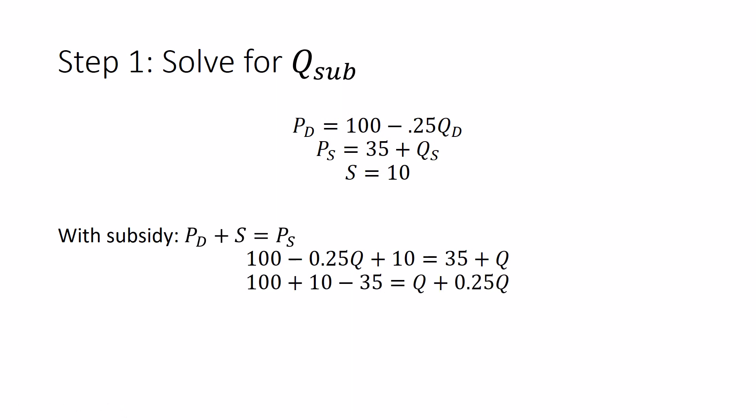Let's combine like terms. Numbers on the left, Qs on the right. 75 equals 1.25Q. Q is 60. We got it. We know how much stuff this market will produce with the subsidy. Remember the Q in equilibrium was 52. With a subsidy, we will actually have a situation where we produce more of a good than equilibrium.